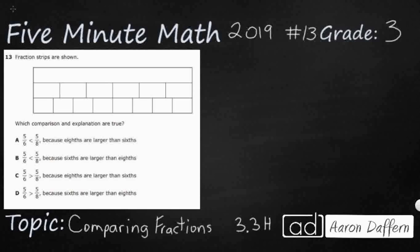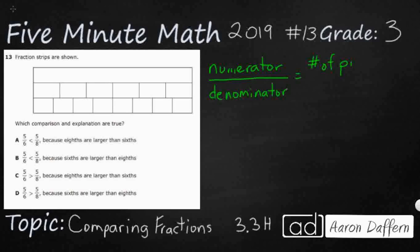But first, let's make sure that we know what we're looking at when we're dealing with fractions. Fractions have two parts: the numerator and the denominator. The numerator is going to be the number of pieces for each fraction, and the denominator is the total number of pieces per row for each fraction.